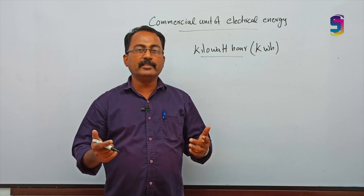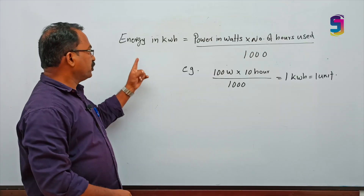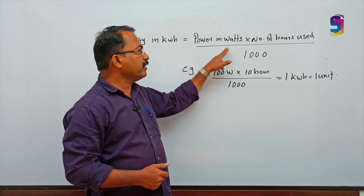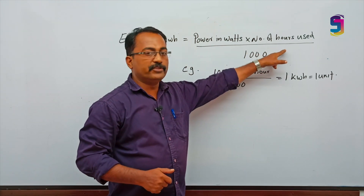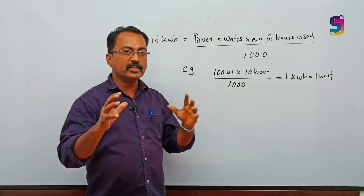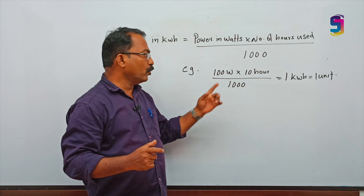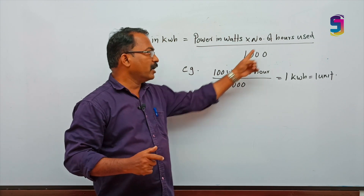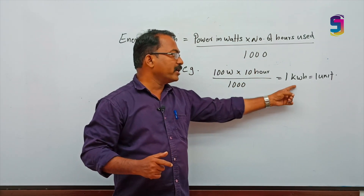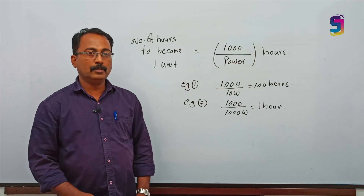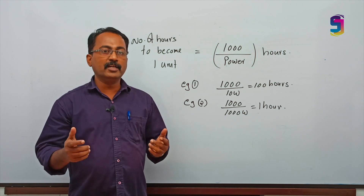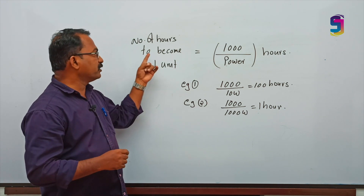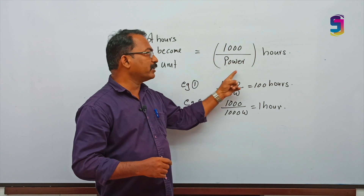Now I will explain how we calculate the electricity bill for our houses. The formula is: energy in kilowatt hours equals power in watts multiplied by the number of hours used, divided by 1000. For example, when I used a 100 watt bulb for 10 hours: 100 watts multiplied by 10 hours divided by 1000 gives one kilowatt hour, or one unit. I am also giving you a formula for how many hours it takes for your electrical equipment to consume one unit: number of hours to become one unit equals 1000 divided by power in watts.